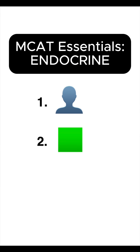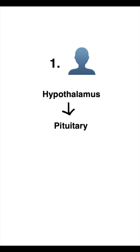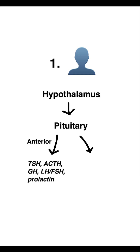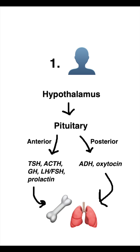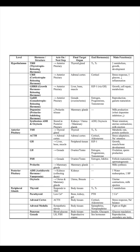Three endocrine things to know to crush the MCAT. Number one: major glands and hormones. The hypothalamus connects to the pituitary. The anterior portion releases all types of hormones; the posterior portion releases ADH and oxytocin. These hormones go to their respective organs. Know the main hormone each gland produces and the hormones' effects.